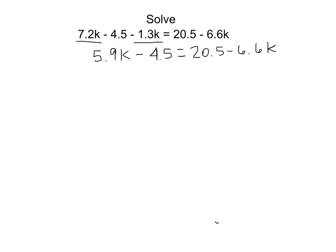Now to get k all by itself on one side, we want all the terms that have a k in them on the left side and all the numbers on the right side. So I'm going to move this 6.6k over. It's subtracted on the right-hand side, so I'm going to add it to both sides. And when I do that on the right-hand side, negative 6.6k plus positive 6.6k is going to give me 0. So on the right-hand side, I will be just left with 20.5. On the left-hand side, I'll have 12.5k. 5.9 plus 6.6 gives me 12.5 minus 4.5.